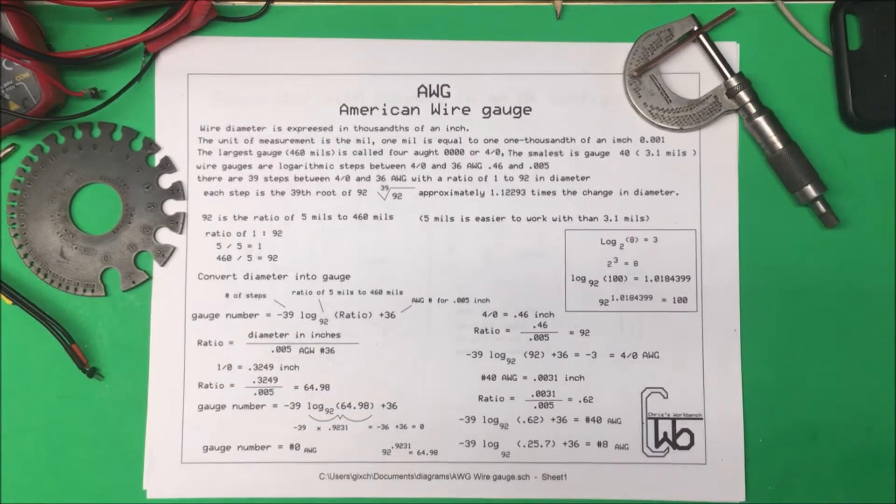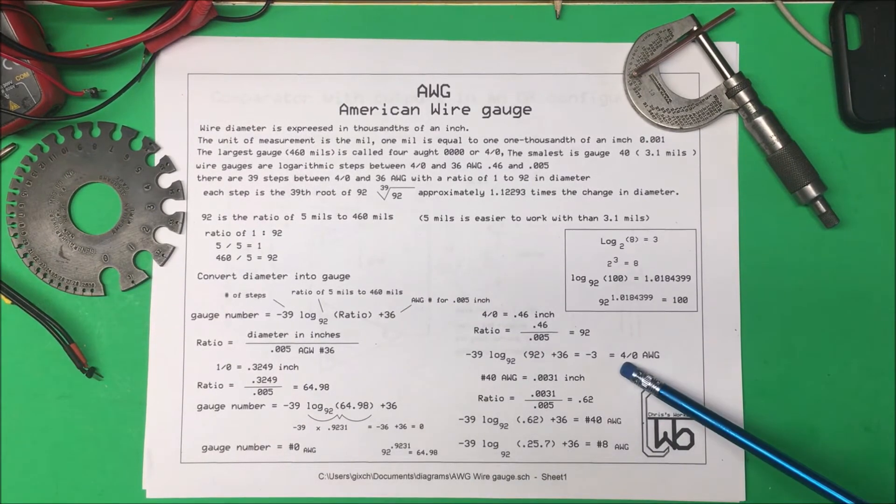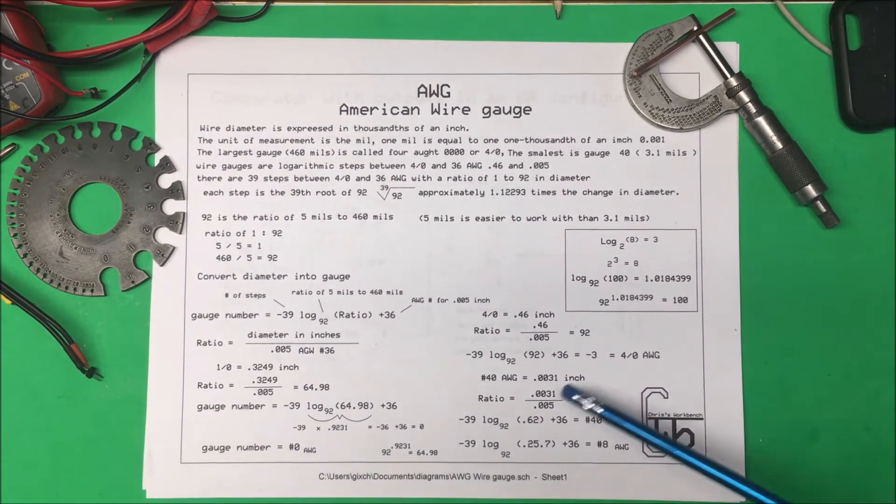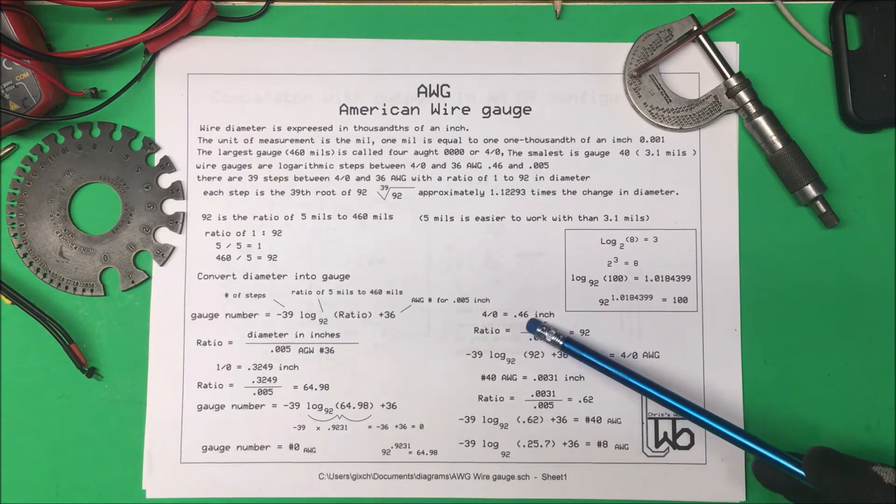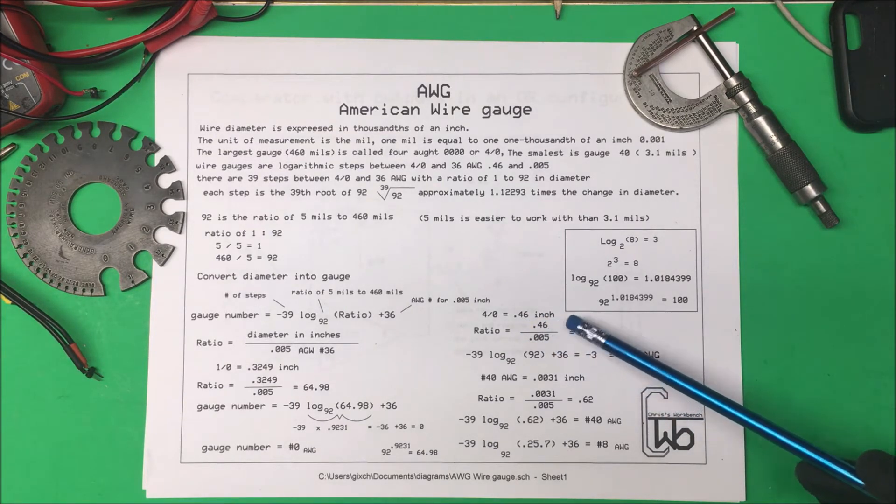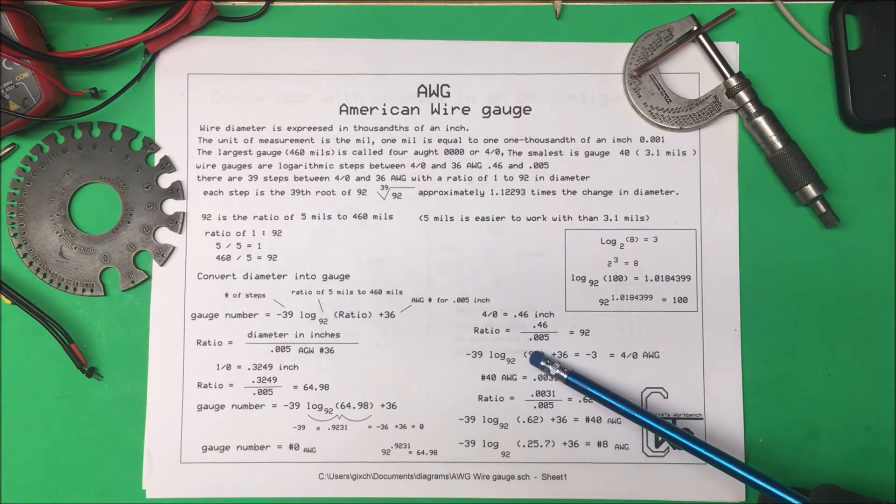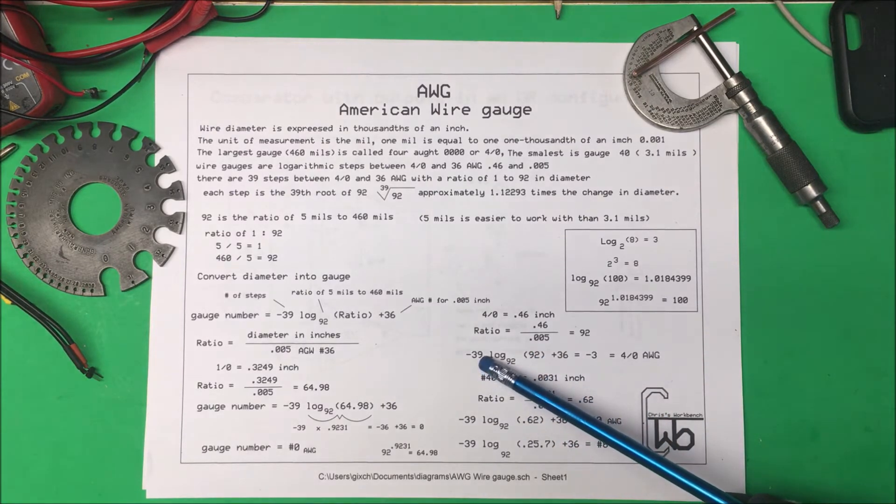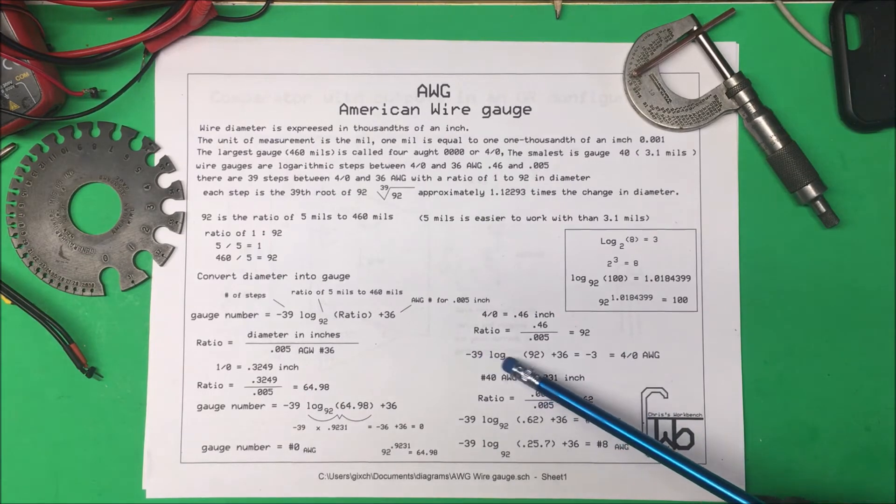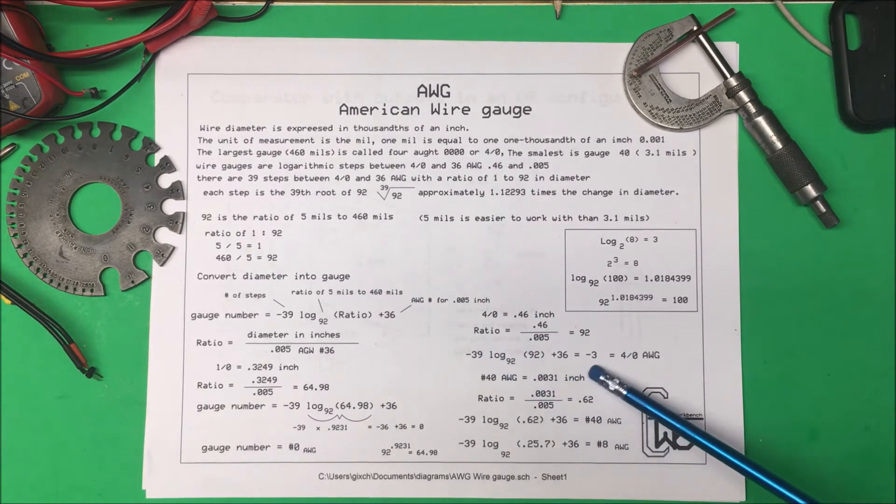So we get a zero. Well how do we get 4-0? 4-0 is 0.46 and we divide that by .005, that's 92. Log base 92 of 92 comes out to zero and we have 39 minus 39 plus 36 that's minus 3.